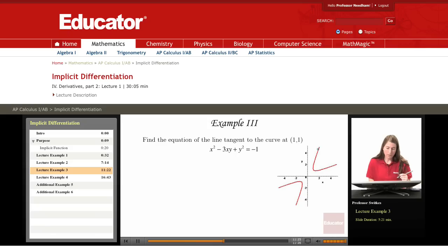With a more complex curve here, let's look at finding the equation of the line tangent to the curve at (1,1) for the curve described by x squared minus 3xy plus y squared equals negative 1.